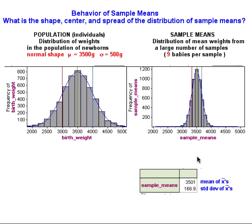Now let's compare the spread. Here I can see visually that there is much less variability in sample means. In fact, it looks like all sample means fall between about 3,000 and 4,000.